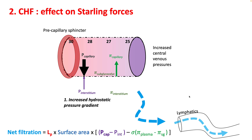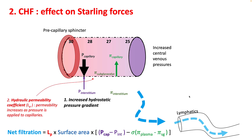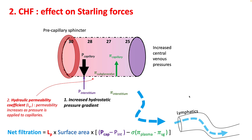However, on the venous end there is no such sphincter, therefore the pressure in the central venous system is easily transmitted to the capillaries. In heart failure, your peak capillary pressure rises as your central venous pressure increases. This increases your hydrostatic pressure gradient, thereby increasing the amount of filtrate made in these capillaries. Because of the stretch of these capillaries, your hydraulic permeability coefficient also increases, further increasing net filtration.